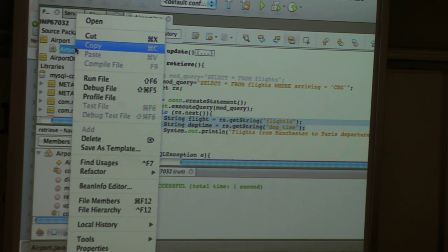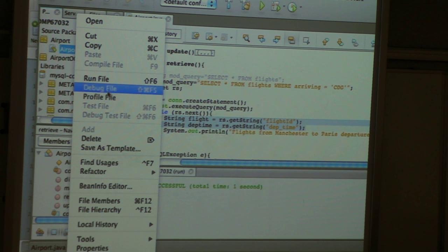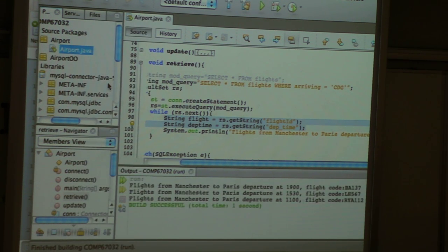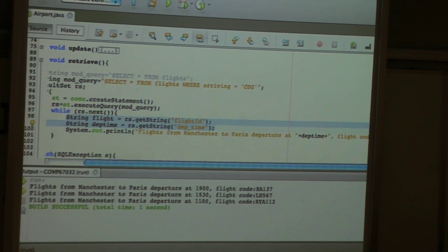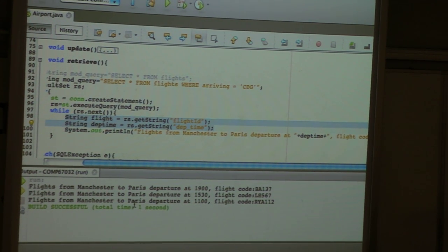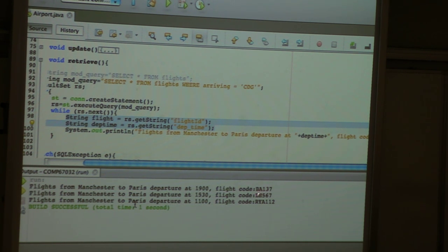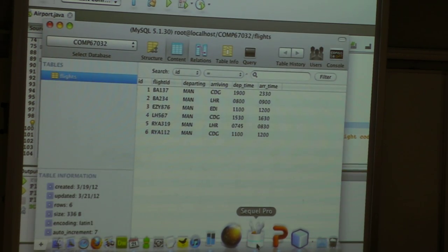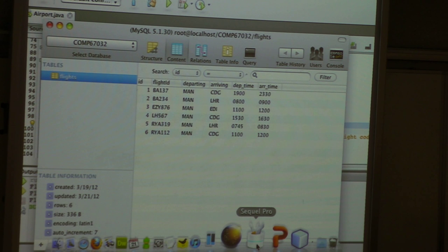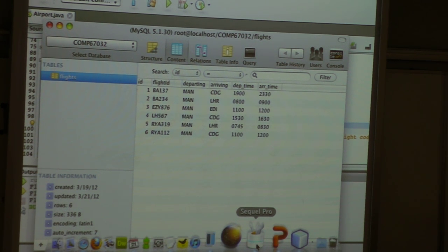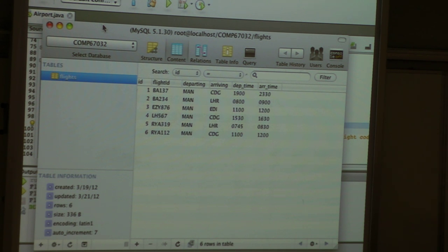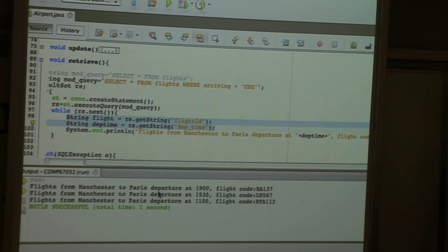I save and execute. This is the result you get: flights from Manchester to Paris, departure at 7 type code. This is what we get from our database. We made the connection, got the pointer to the database, got the data. Now if you're working with a server, you can embed this data within HTML tags and this is what you'd get on the screen as a user.